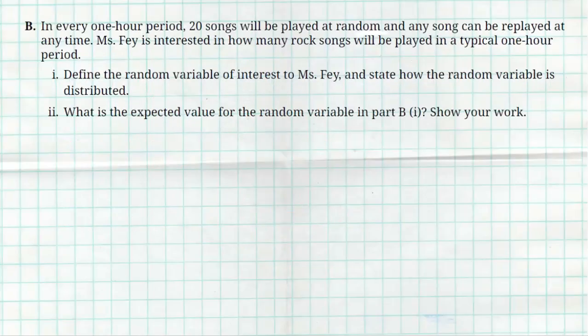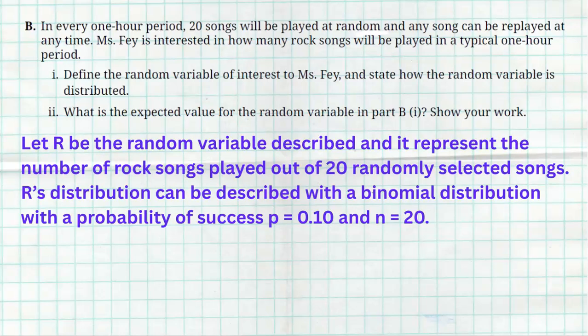Question B. In every one-hour period, 20 songs are played at random. And remember, any song could be replayed. So how many rock songs will be played in a typical one-hour period? It wants us to define the random variable of interest to Mrs. Faye and state how the random variable is distributed.